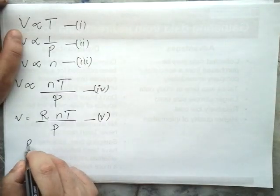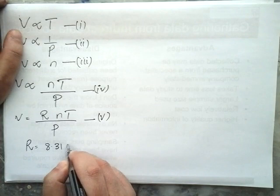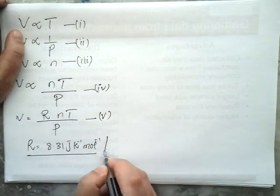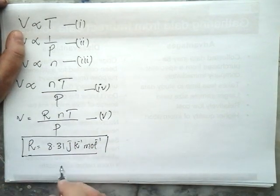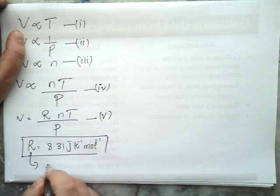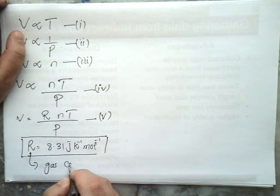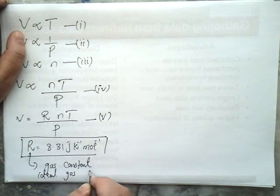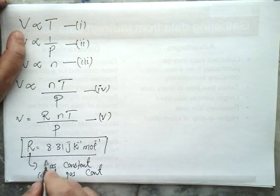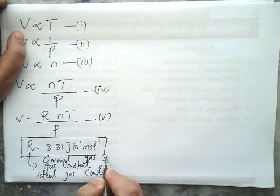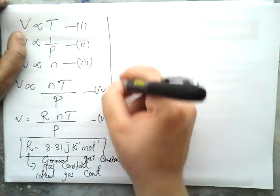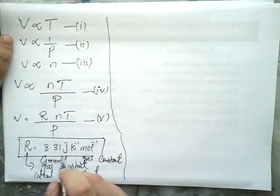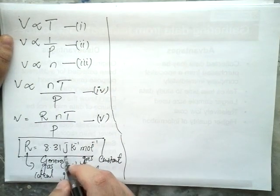The value of R is 8.31 joules per Kelvin per mole. This is a constant value and R is called the gas constant, sometimes also called the general ideal gas constant or general gas constant. The unit of R is joule per Kelvin per mole.